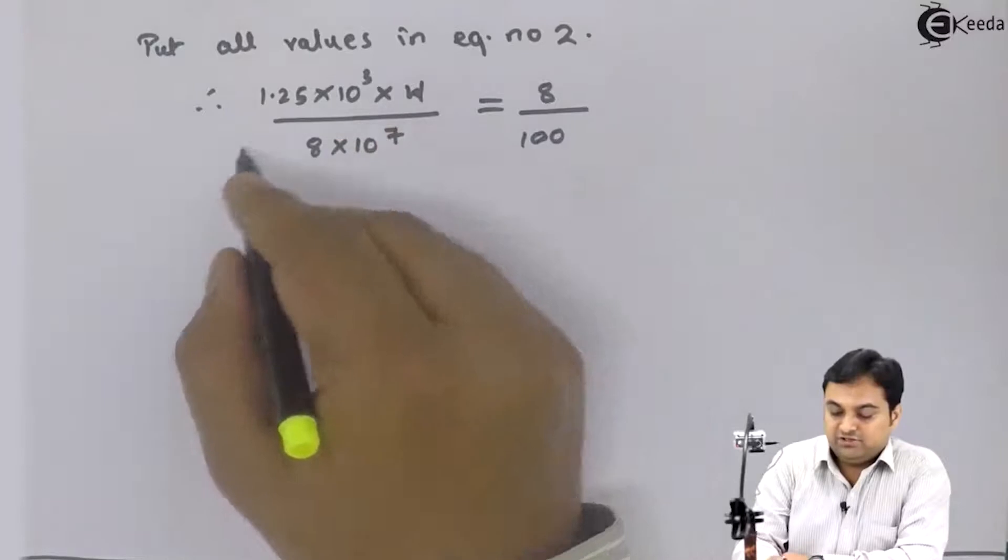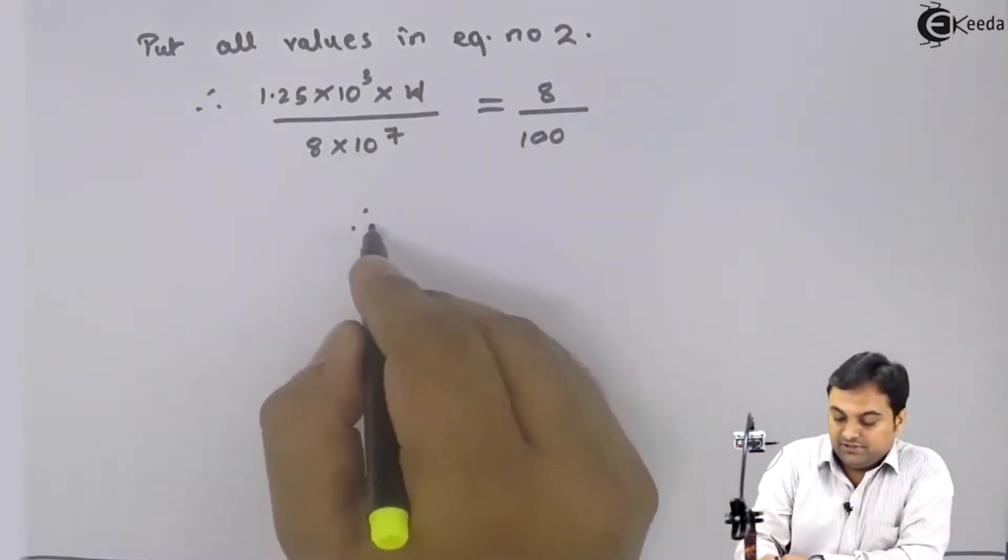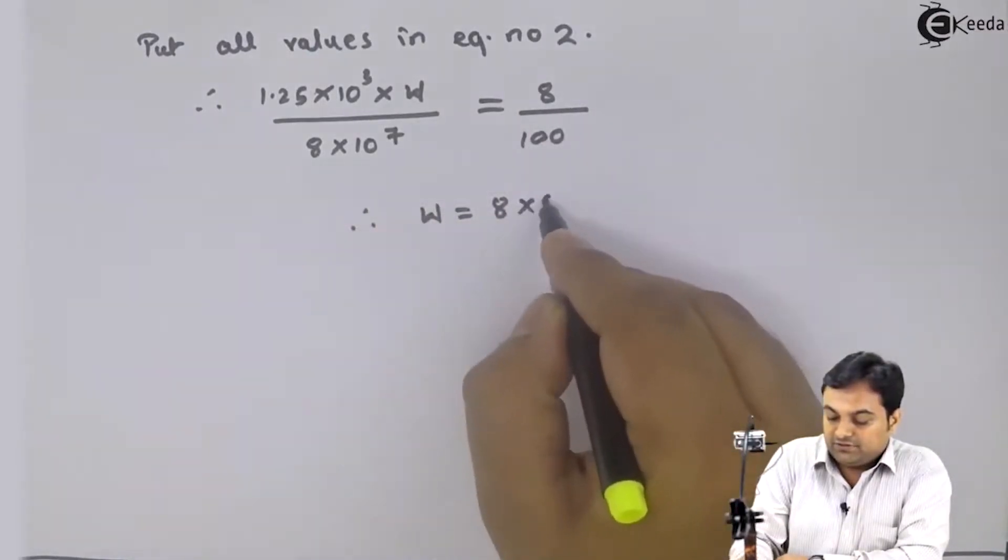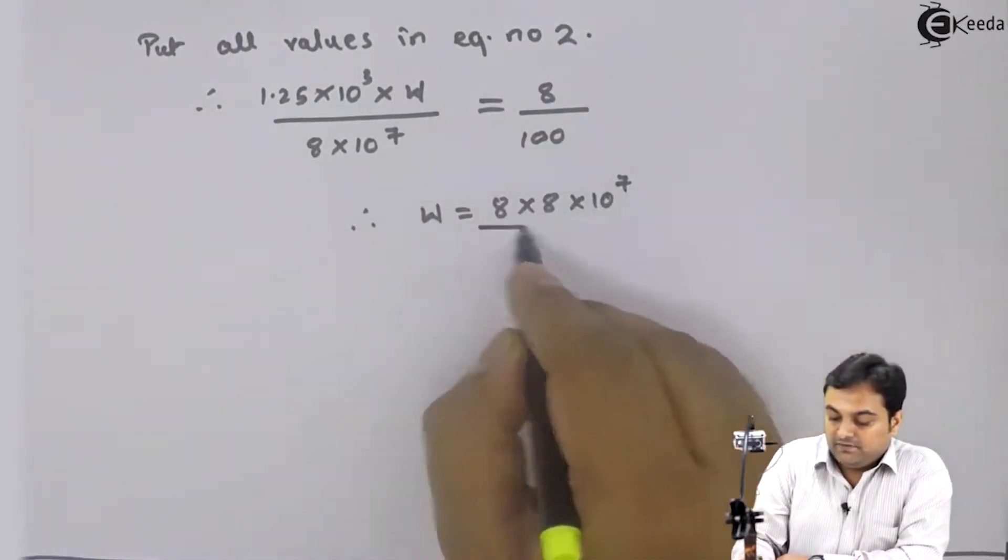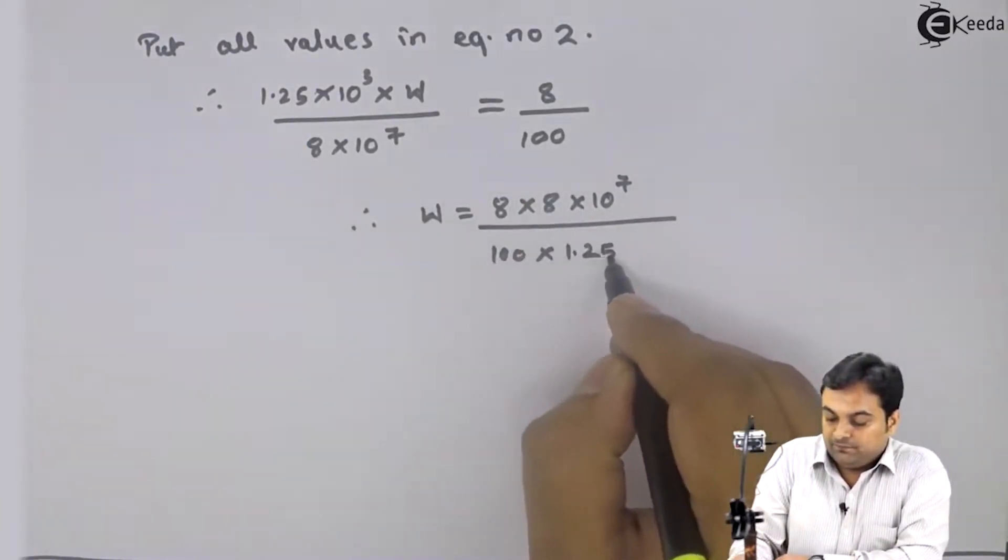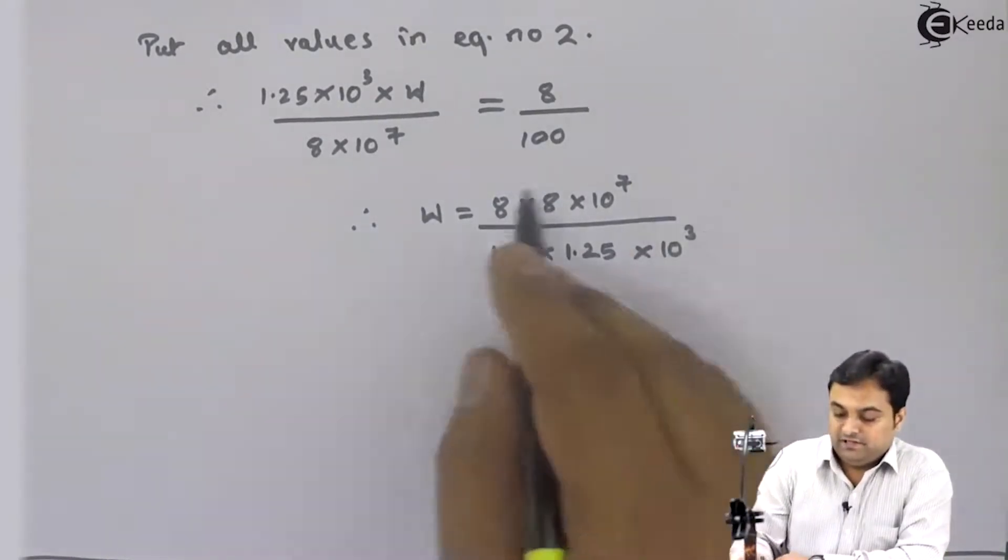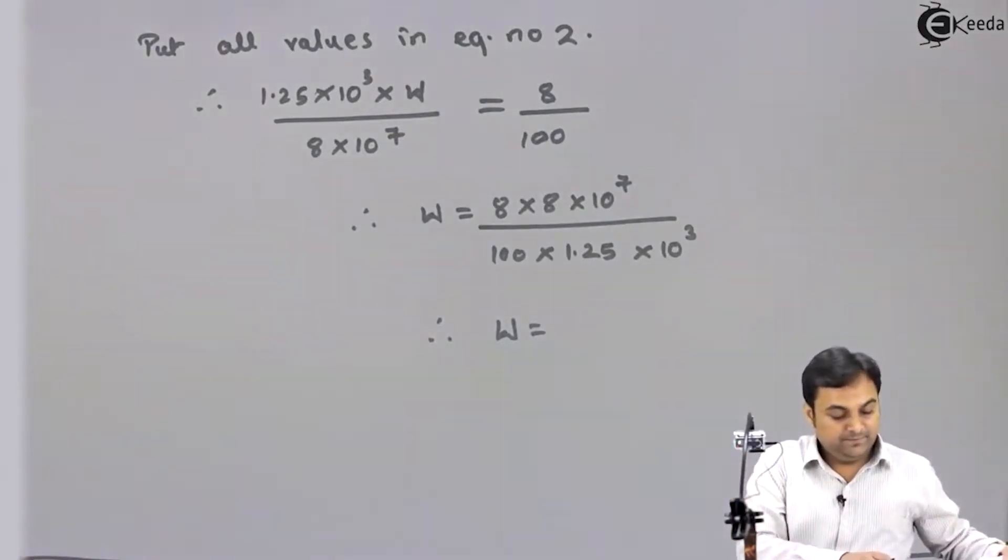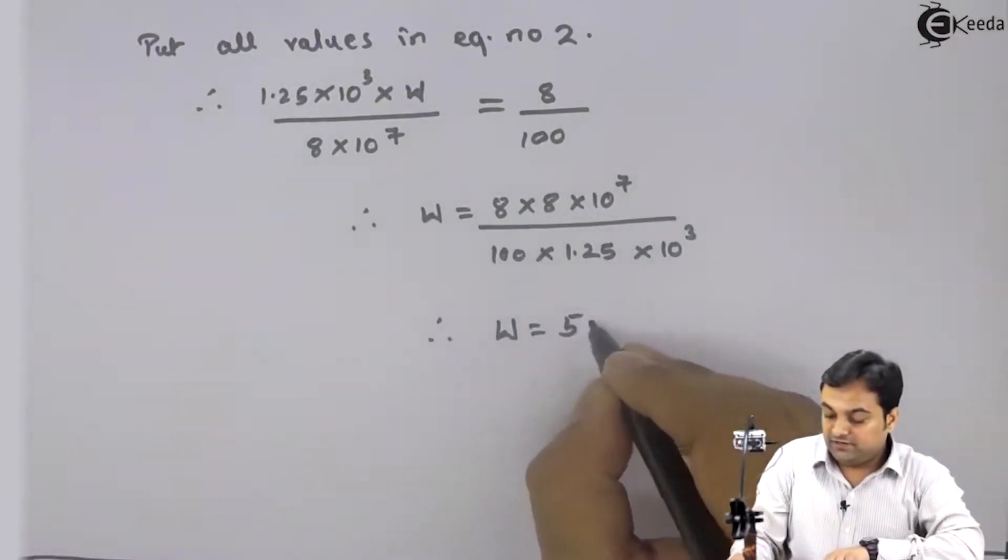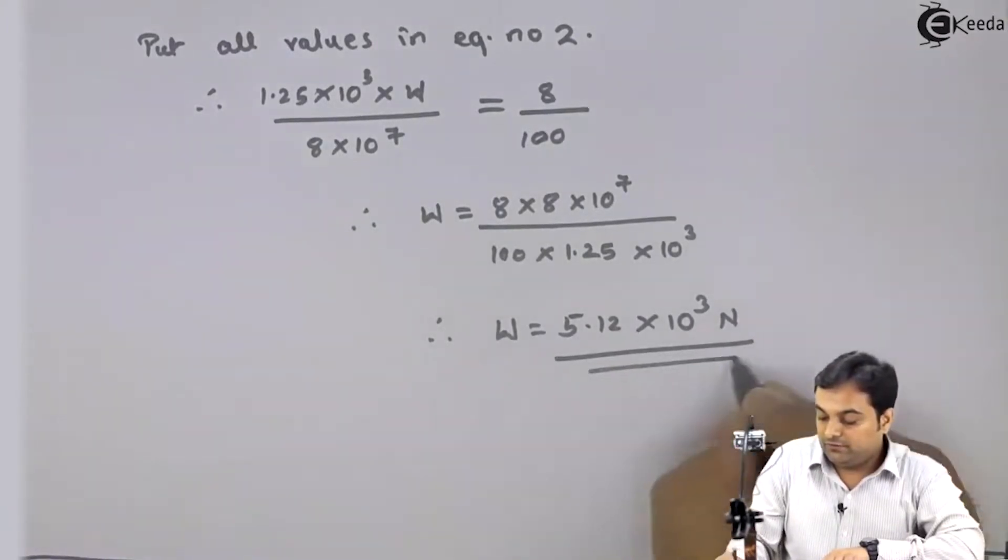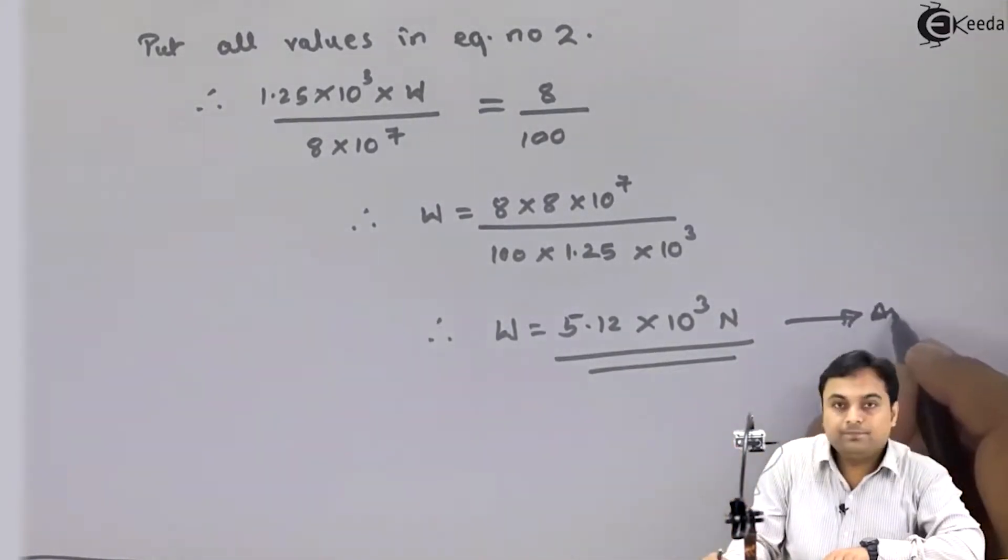I will keep W on one side and shift all the terms on the other side. Therefore, W is equal to 8 into 10 raise to 7 divided by 100 into 1.25 multiplied by 10 raise to 3. If I calculate the whole thing very carefully, my answer of W will be 5.12 into 10 raise to 3 N.